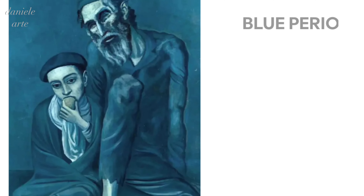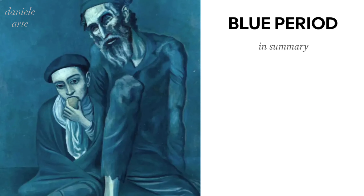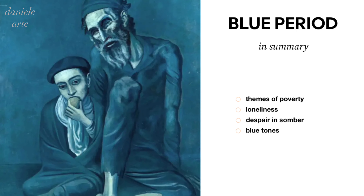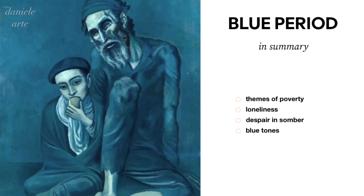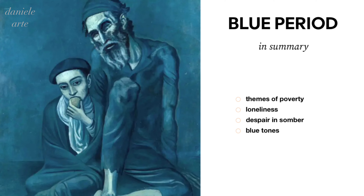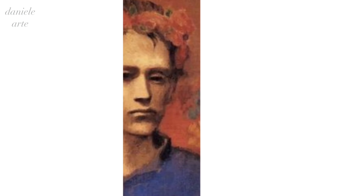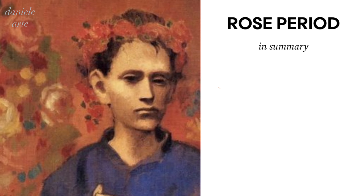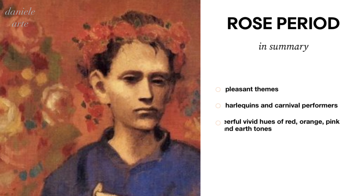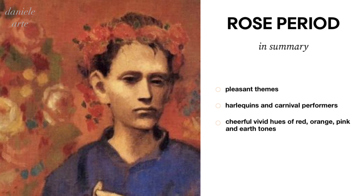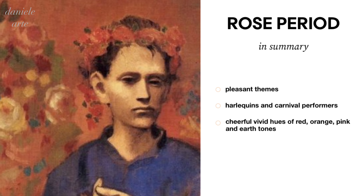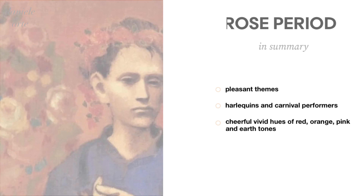On the other hand, the Rose Period, which lasted from 1904 to 1906, was characterized by the use of warm and pastel tones. It reflected his happiness after meeting his future wife, Olga Koklova.